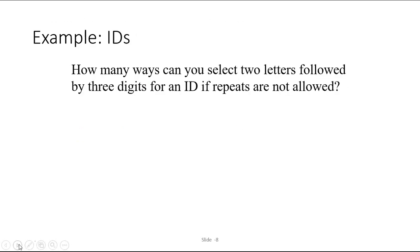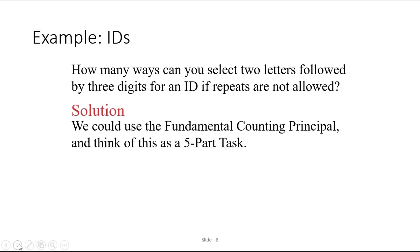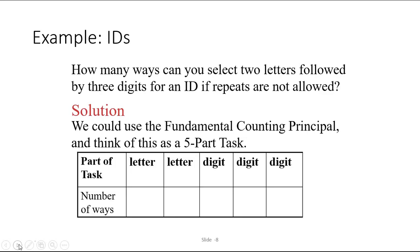How many ways can you select two letters followed by three digits for an ID if repeats are not allowed? We've worked this problem or one similar to it in the past in my class. We used the fundamental counting principle. We broke the problem down into a five-part task and counted how many ways to complete each part. First, we picked the first letter, which there are 26 letters in the alphabet, and then since repetition is not allowed, there were 25 possibilities for the second letter.